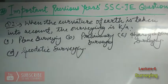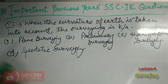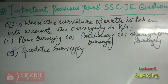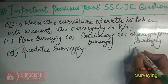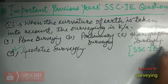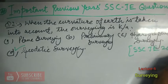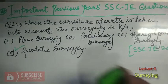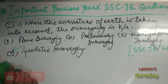We know very well that when the curvature of the Earth is taken into account, that type of surveying is called geodetic surveying. So option D is correct. This question came in SSC JE 2012.